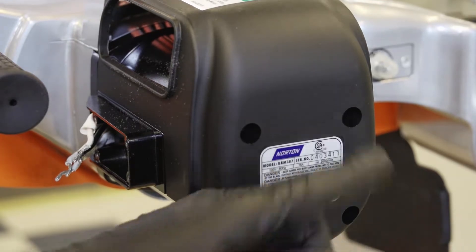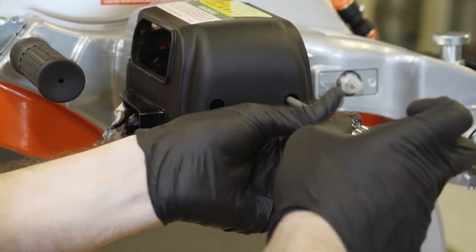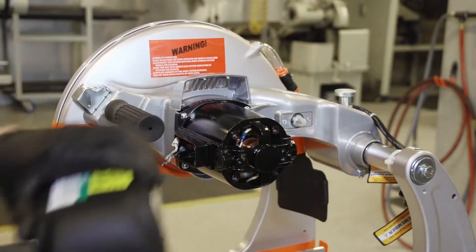Remove the four screws that retains the motor housing in place. Lift the motor housing off the machine.